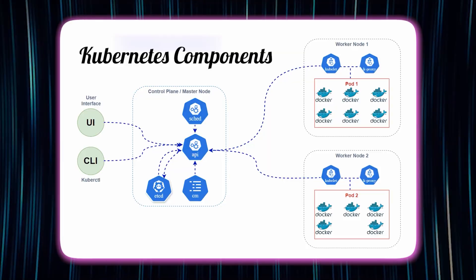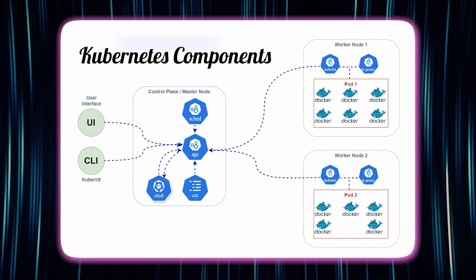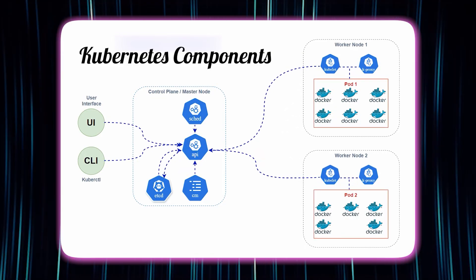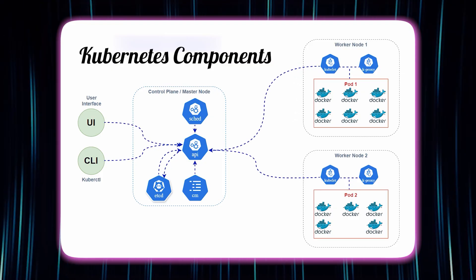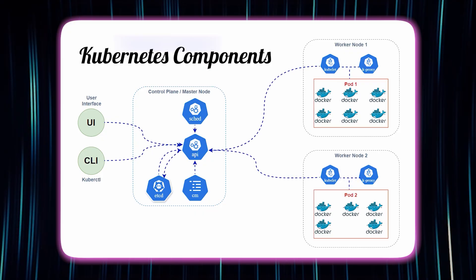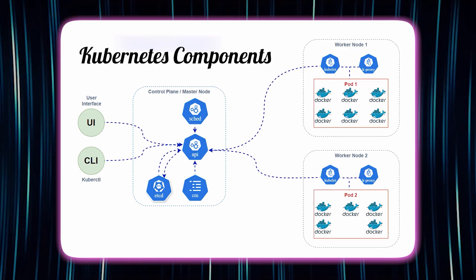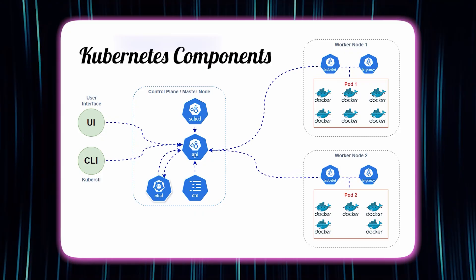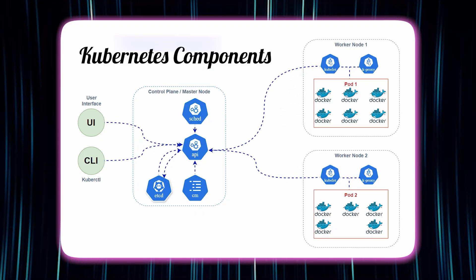In Docker, there is a container. If you select all containers, you can create a container. You can use the container, the node, the cluster, and the master. These are the four components.